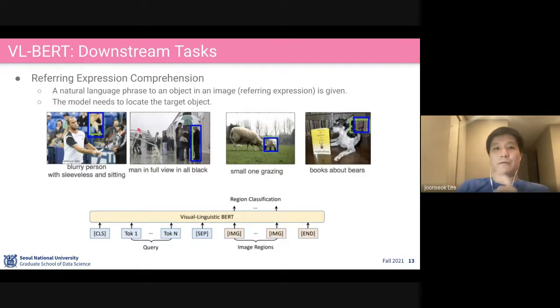Another task is referring expression comprehension. The task is given an image and text describing something within the image. Our task is finding out where it's actually happening within the image spatially. Given the region of interest, which are the candidates for these answers, and the query text, we contextualize within these pairs.